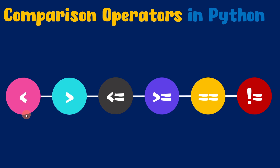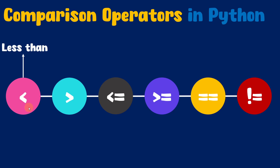First we have the less than comparison operator. Less than comparison operator will take two values. If the value present on the left hand side is lesser than the value present on the right hand side, then the less than comparison operator will give true. Otherwise it will give false.